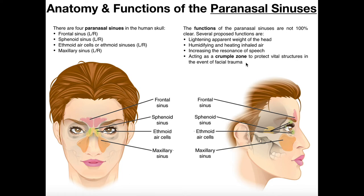It's not one that we normally think about, but it's actually proposed that what the sinuses are really doing is actually protection — they're acting as what's called a crumple zone to protect vital structures like the brain in the event of facial trauma. To understand what a crumple zone is, we're going to look at this animation of a car crash.